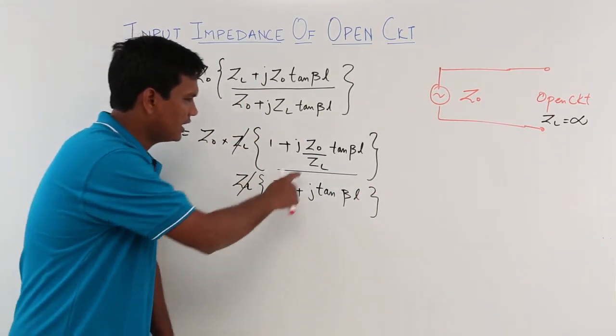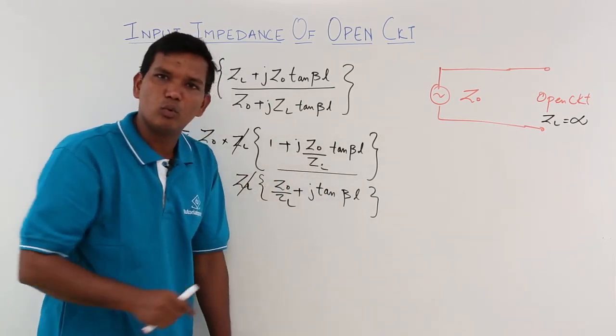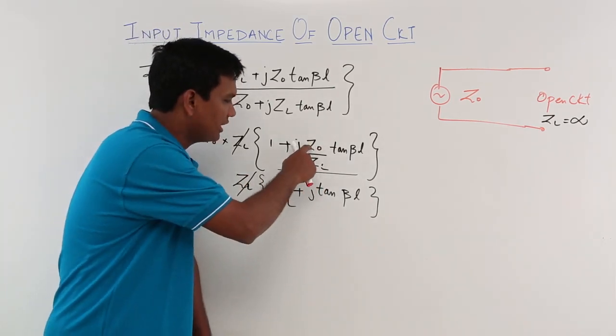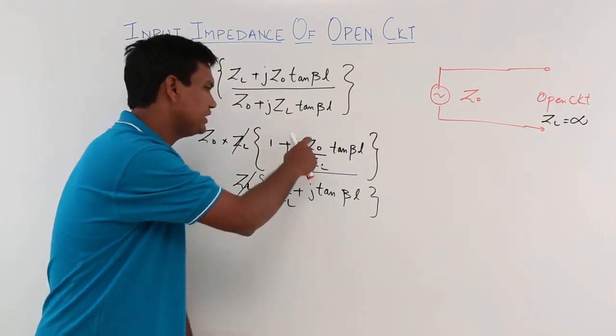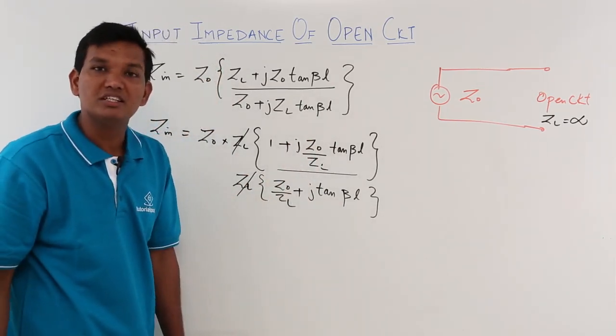Now, what is this? Z naught by Z L. What is Z L? Z L is infinite. Z naught will have some value. Anything divided by infinity will come out to be zero.